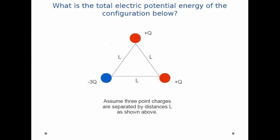I have three point charges: plus Q, plus Q, and minus 3Q. They are on the three corners of an equilateral triangle, side length L. And I ask, what is the total electric potential energy of the configuration below?